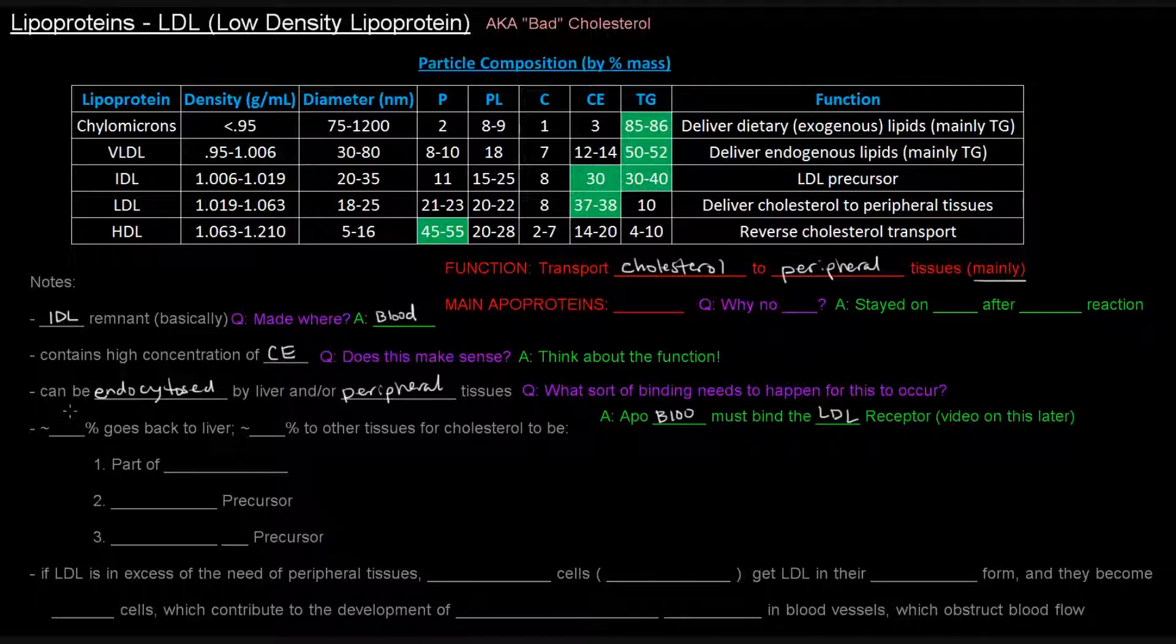So, of the LDL, about 60% goes back to the liver, which is a pretty large proportion, but about 40% goes to deliver the cholesterol to these peripheral tissues, which is what we think about mostly as the function of this.